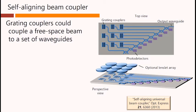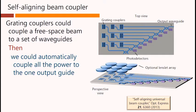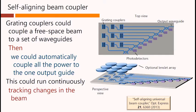So, we could, for example, have grating couplers that couple some free space beam shining onto the top of this chip on the right here, to a set of waveguides. Then, using our algorithm, we could automatically couple all the power from those grating couplers to the one output guide on the top right. This could run continuously, tracking changes in the beam, and still putting all the power in the output.